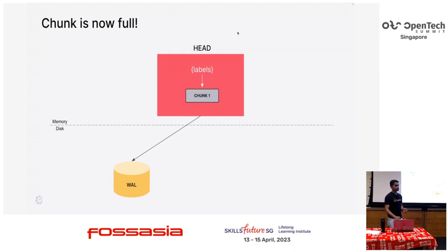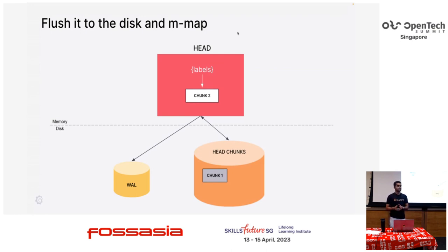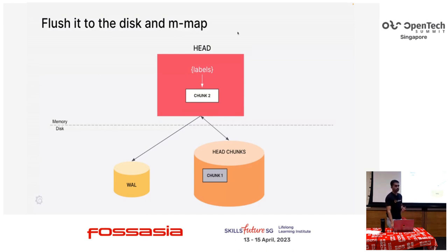Let's say you added more samples and the chunk got full. You can't just keep growing the chunk. Once the chunk is full — in our case we take it as 120 samples, though we are currently trying to cap it at a certain size as well — we just memory-map it into something called head chunks. Head chunks are just a bunch of files where we store the compressed chunk and just the reference to that particular chunk — where it is in the file in memory. So you are not storing the compressed chunk in memory; you are just holding an 8-byte reference. Whenever you want to fetch this series, you take the reference, fetch it from disk, and then query on it. This saves memory during the majority of the time when you don't need to query that data.